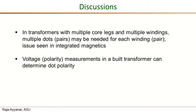Two additional points: first, when you have transformers with multiple core legs and multiple windings, it is not enough to have just one dot for each winding — we need one dot for each pair of windings. For example, with three windings, we have one dot pair for windings one and two, another for windings two and three, and one for windings one and three. This kind of more complex situation arises in integrated magnetics based power converters.